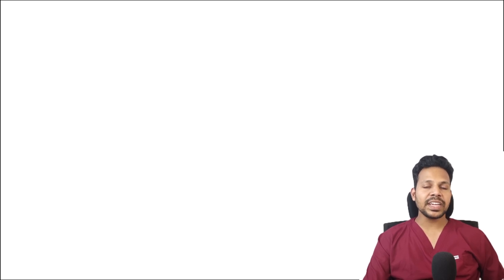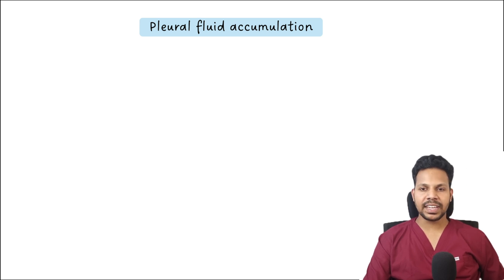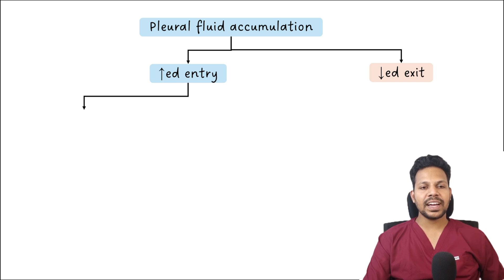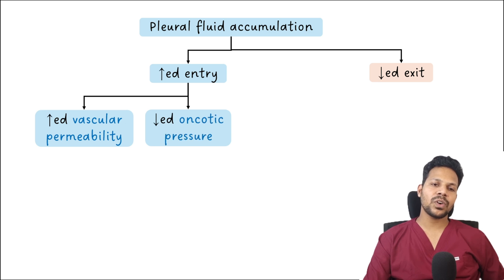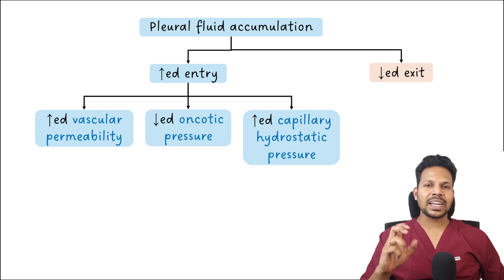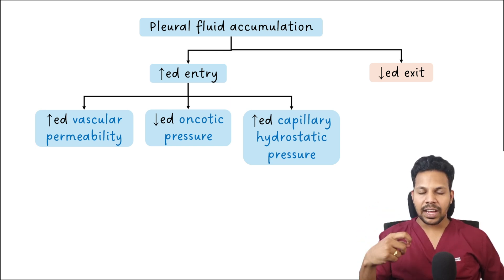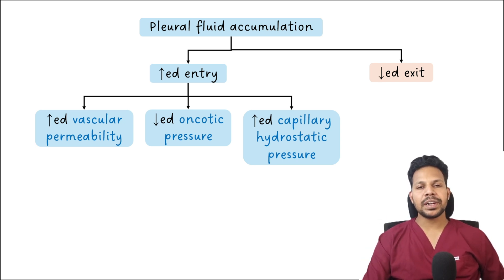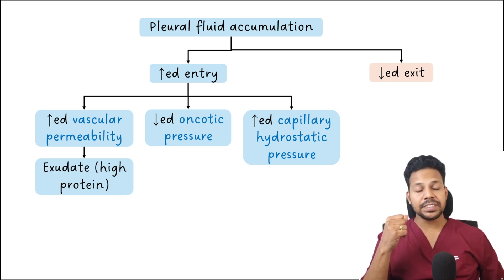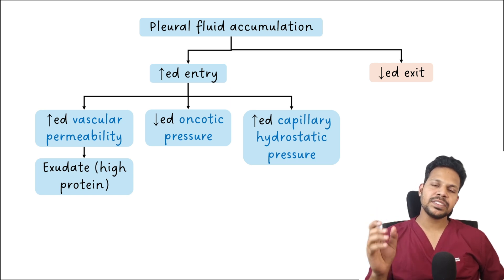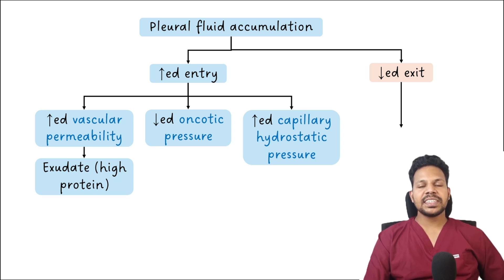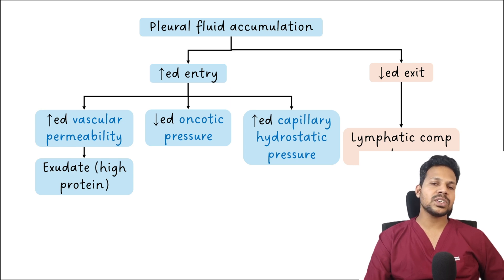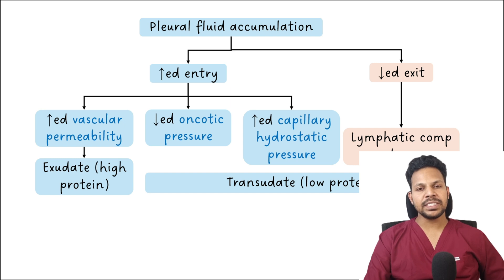The normal quantity of pleural fluid is 5 to 15 ml in a normal individual, and it requires 300 ml for clinical identification. Pleural fluid accumulation requires either increased entry or decreased exit. Increased entry can be due to increased vascular permeability, decreased oncotic pressure, or increased hydrostatic pressure — these are the Starling forces. Increased capillary permeability results in a high-protein exudate seeping into the pleural space. Decreased exit can happen due to lymphatic obstruction, and all three mechanisms — reduced oncotic pressure, increased hydrostatic pressure, or lymphatic obstruction — can result in a low-protein transudate in the pleural space.